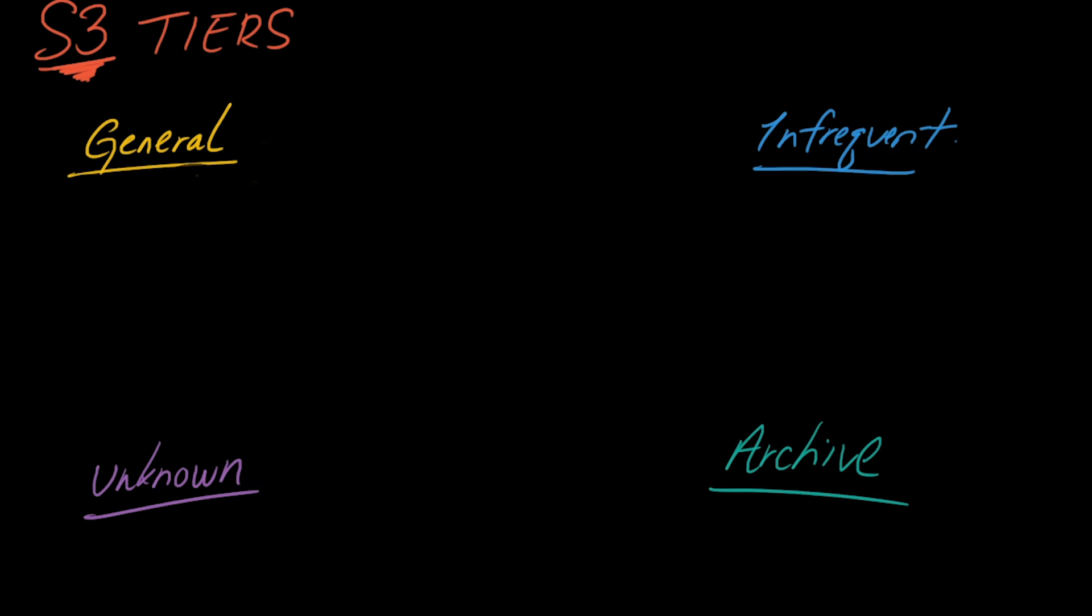So that's what I've laid out here for you now. These are the four general categories. Within these are the actual classifications of tiers but these are the broad strokes. So first we have general which is if you're using AWS S3 for the first time and if you just click next next next when you're creating your bucket you're going to get general and standard is the default one within the general.